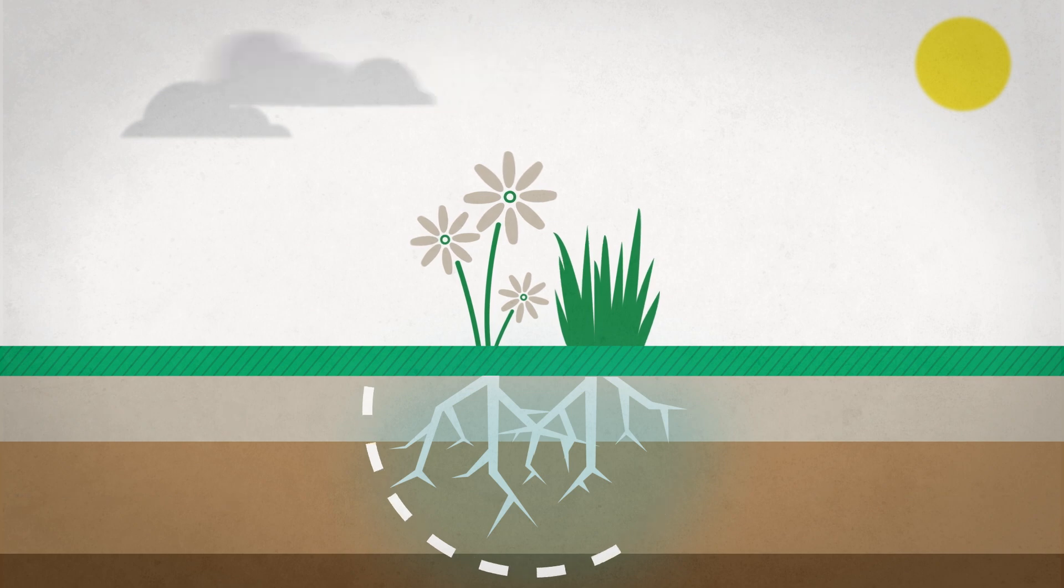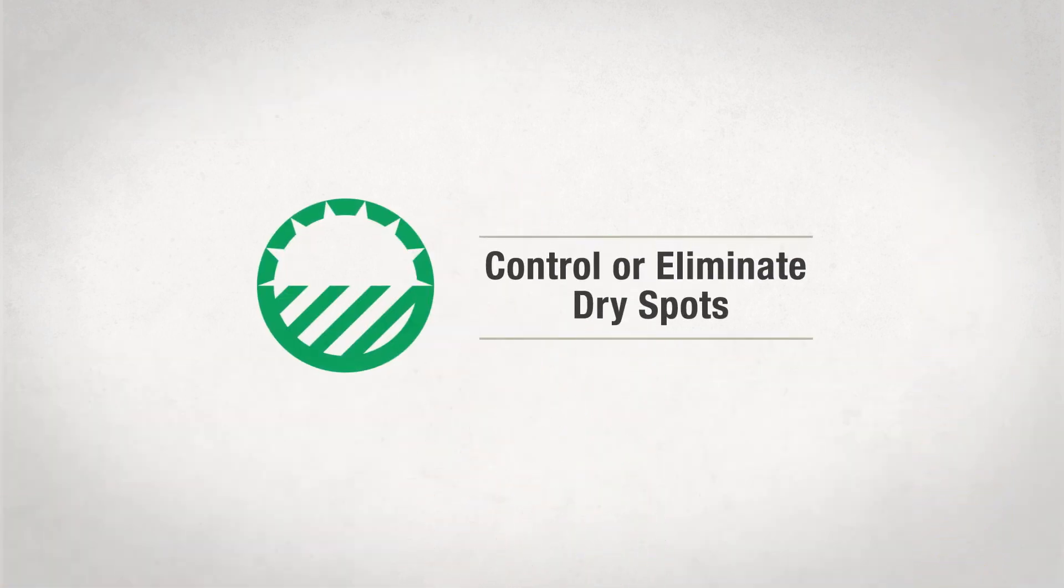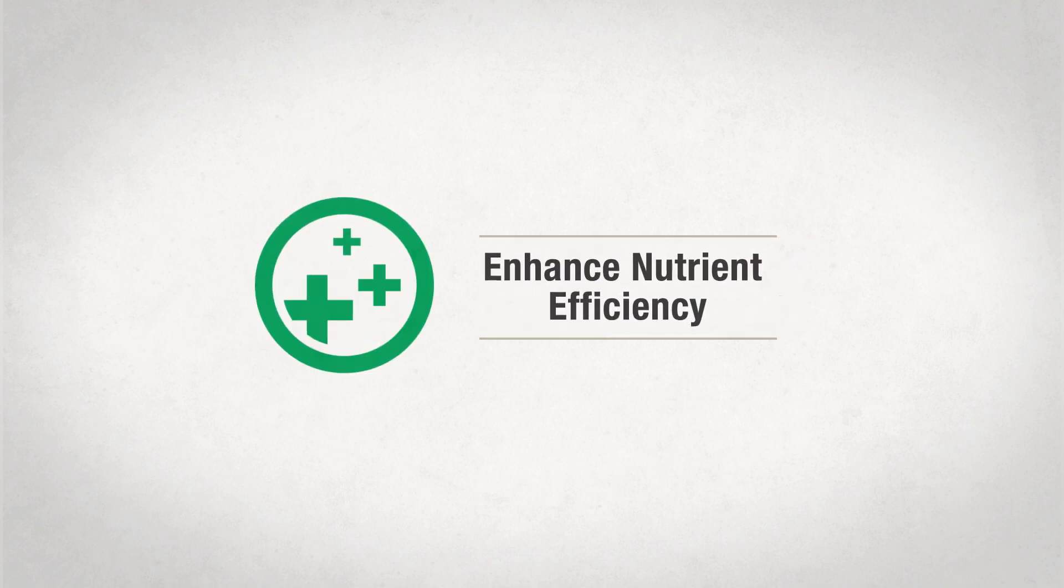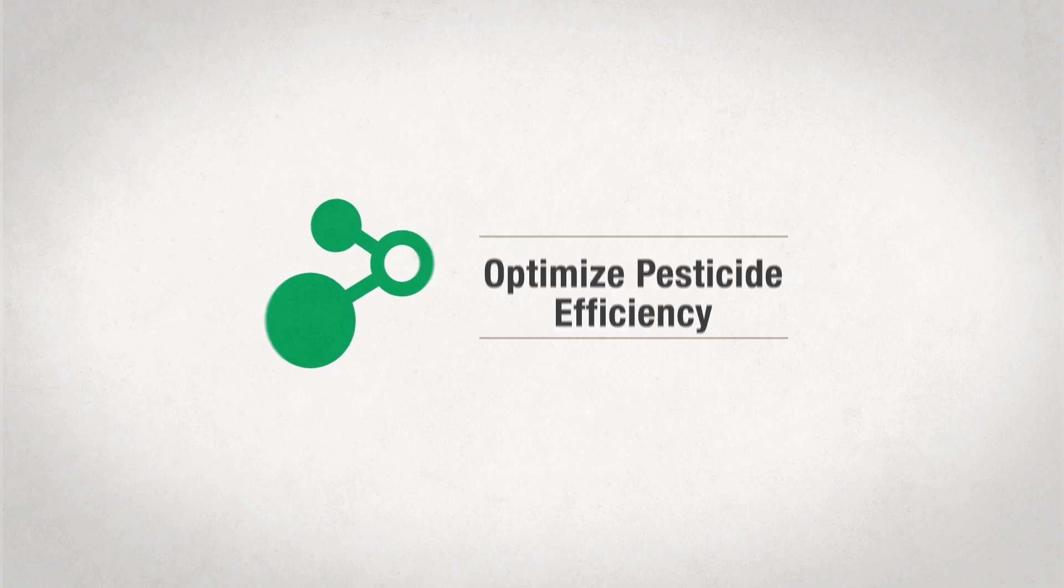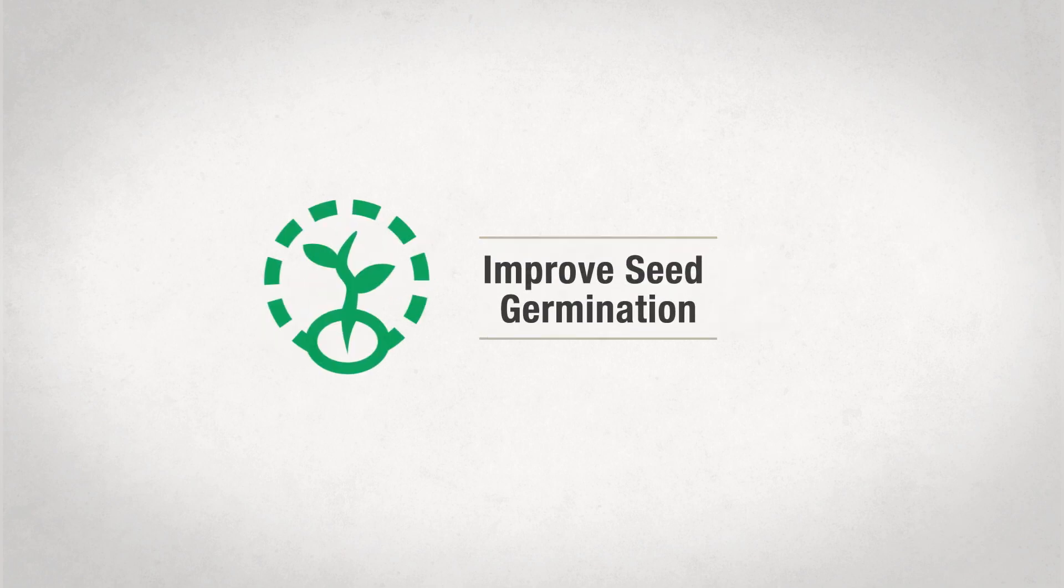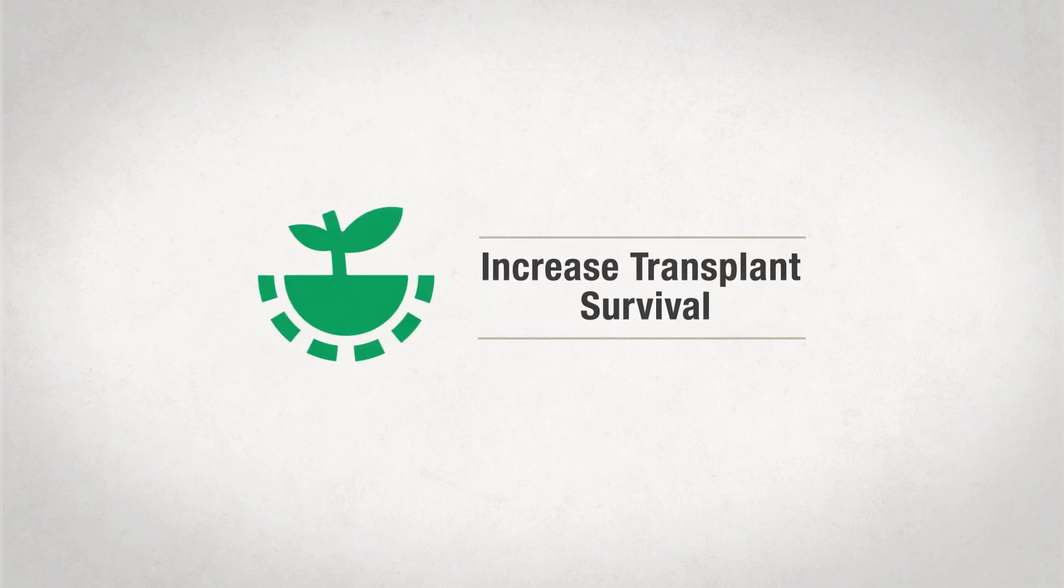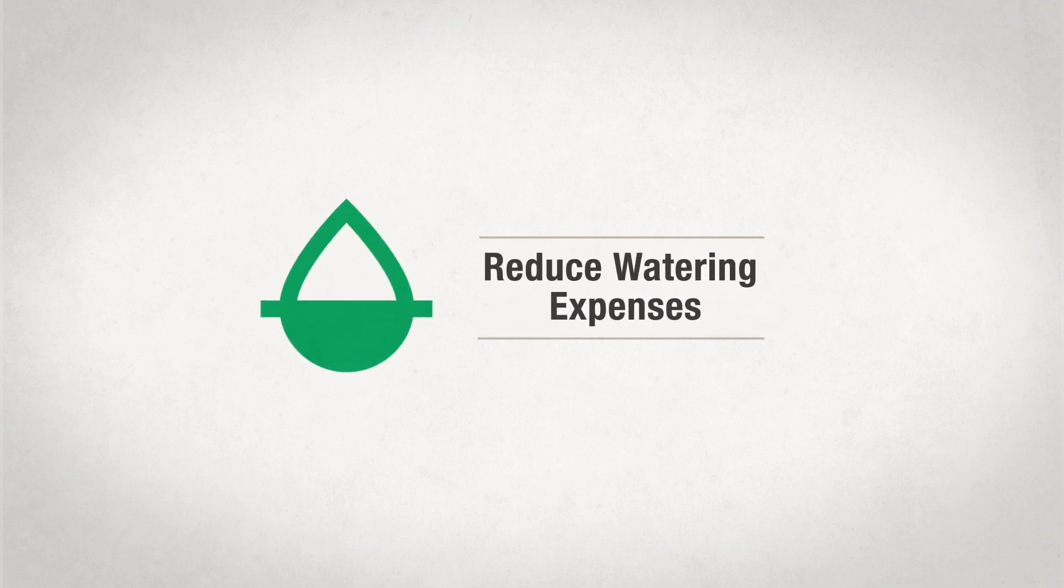By breaking the drought cycle with Lesko Moisture Manager, you can control or eliminate dry spots, enhance nutrient efficiency, optimize pesticide efficiency, improve seed germination, increase transplant survival, and reduce watering expenses.